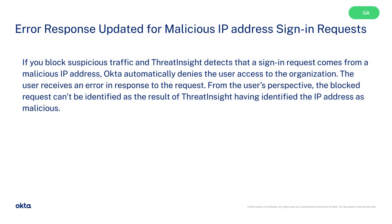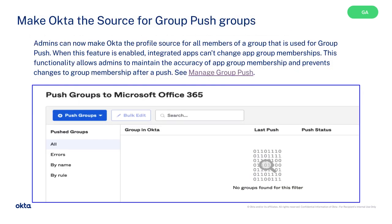Now with Threat Insight, malicious IP addresses can be more easily blocked and addressed, and Okta automatically denies the user access to the org. Making Okta the source for group push groups allows admins to maintain accuracy of app group memberships and prevents changes to the group memberships after a push.